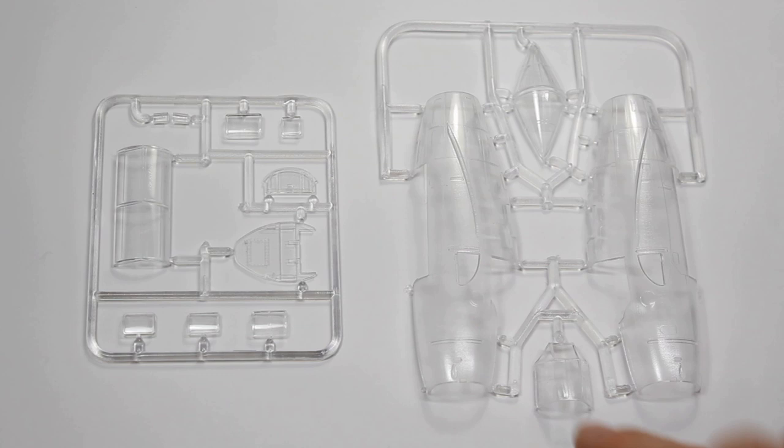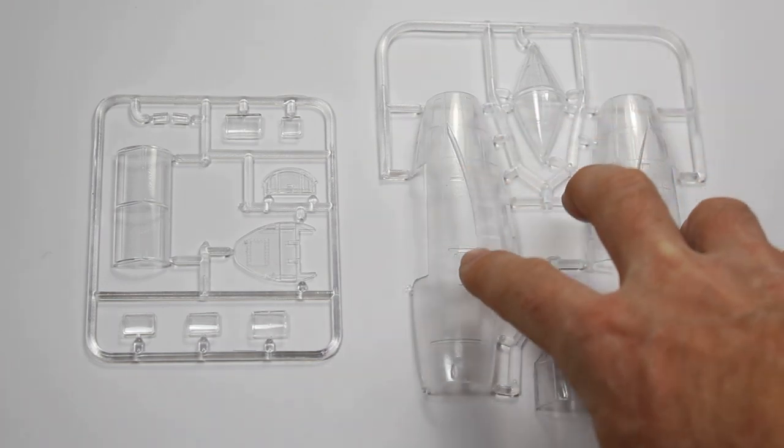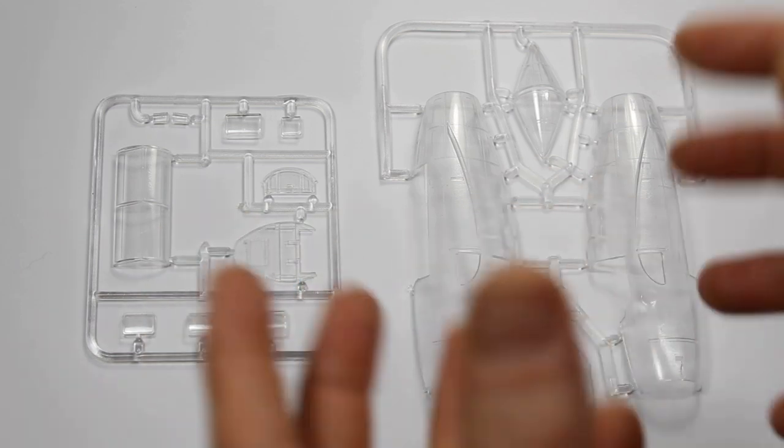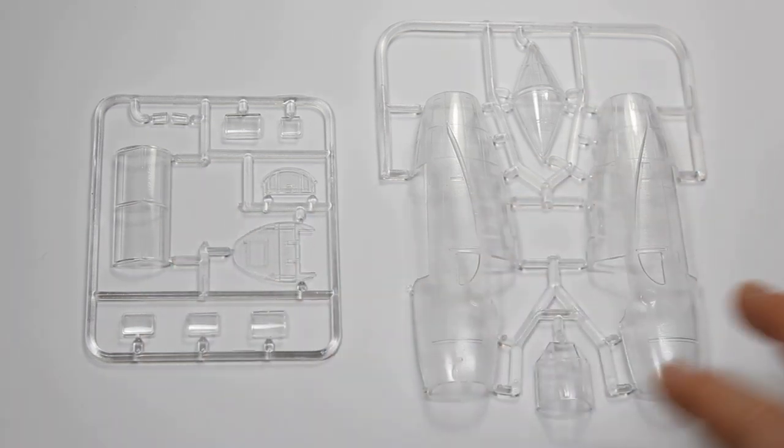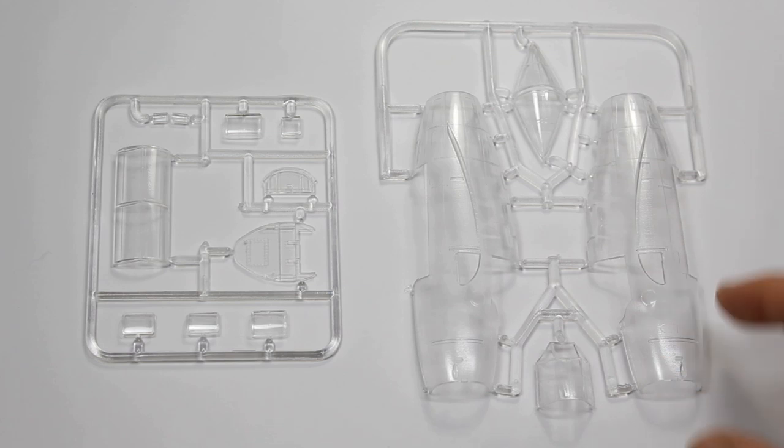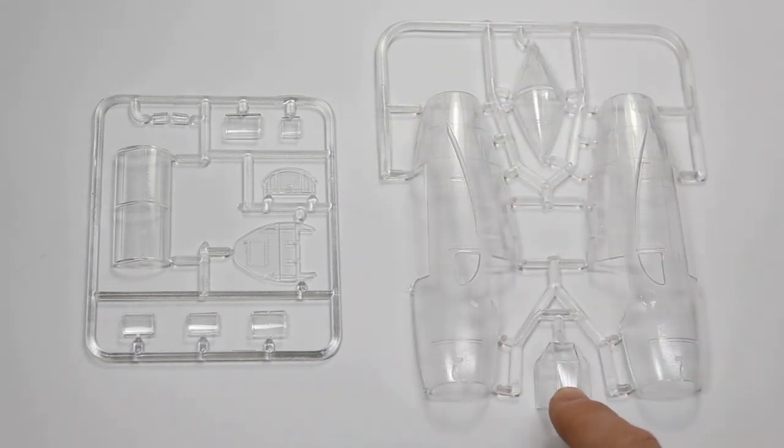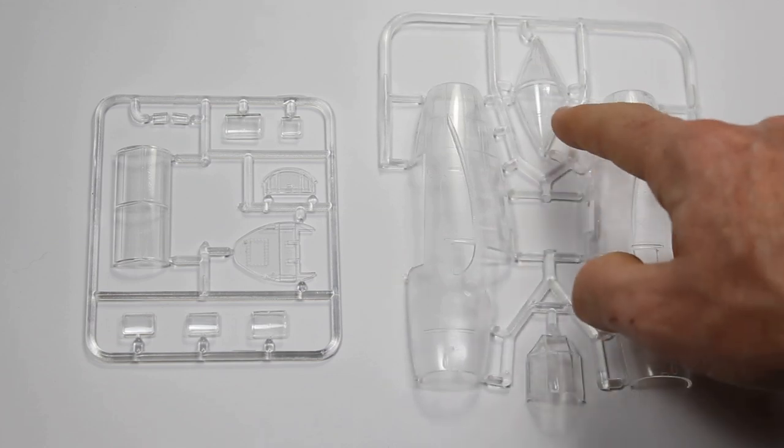Starting with the sprues, these are the clear parts. It's quite unconventional in the way that they've molded the fuselage halves. The bit at the front is the cockpit, really, in all clear part, so that caters for all of the windows that run around here.